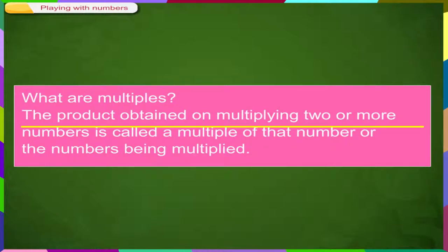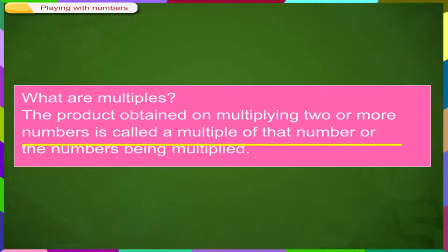The product obtained on multiplying 2 or more numbers is called a multiple of that number or the numbers being multiplied.